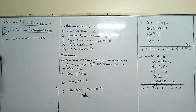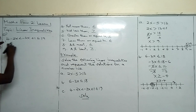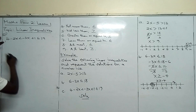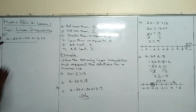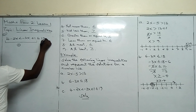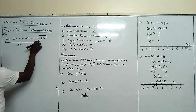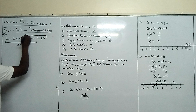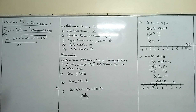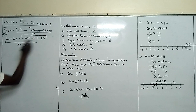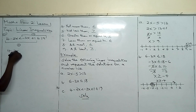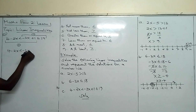To get the first linear inequality, start from the left and move up to where we have the second inequality symbol. The first inequality is 4 minus 2x less than minus 3x plus 1. The second inequality starts from minus 3x plus 1 and continues to the right. So this becomes our second linear inequality, and we will solve them separately.